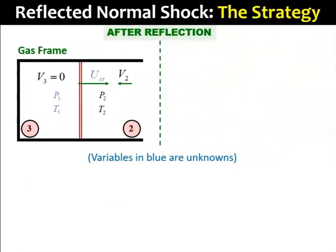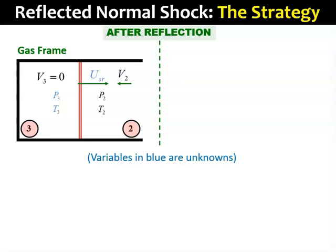Now, let's look at the strategy to solve the problem in more detail. Here, we'll just focus on the problem after the reflection because we already know how to solve the problem before the reflection. In this slide, I'm going to highlight the unknown variables in blue. Those are the parameters that we need to find to complete this problem. In the original gas frame, we can see that the unknowns are u sub sr, p3, and t3.